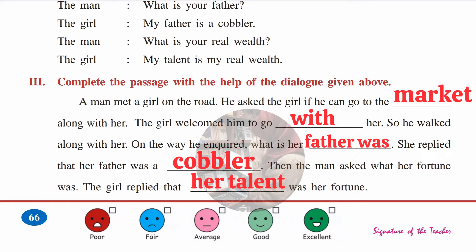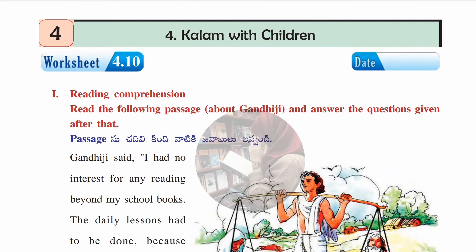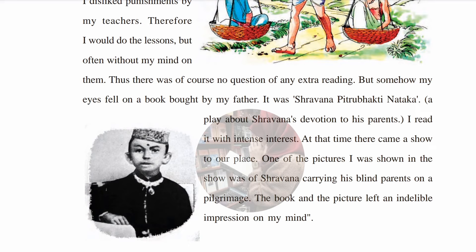Worksheet 4.10 has a reading comprehension passage about Gandhi Ji. You need to read it carefully and understand it before answering. The teacher has already explained the passage, so only the answers are covered here to save time.